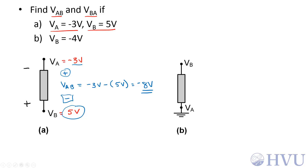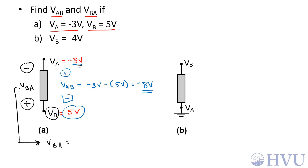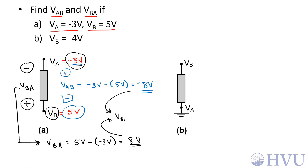VBA switches the assumed polarity, so now node B is at the assumed positive terminal and node A is at the assumed negative terminal. To get VBA, I still take the voltage at the positive terminal, which is positive 5 volts, and subtract from that the voltage at the negative terminal, which is negative 3 volts. So that becomes 5 volts minus negative 3 volts, which is positive 8 volts. Notice that VBA is just the negative of VAB. Changing the order of the subscripts changes the assumed voltage polarity, which changes the sign on the numerical value of the voltage.